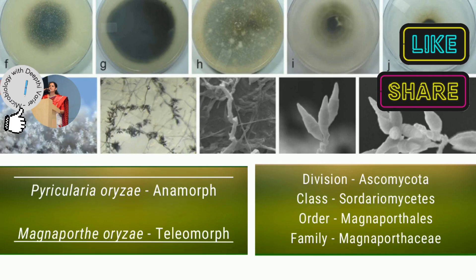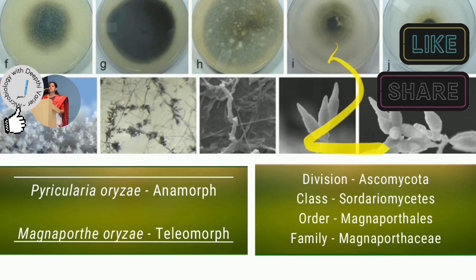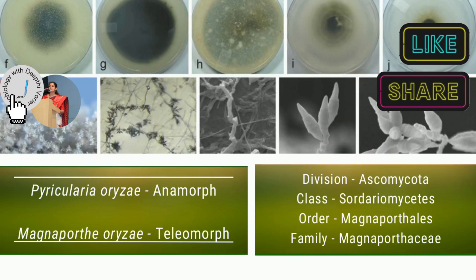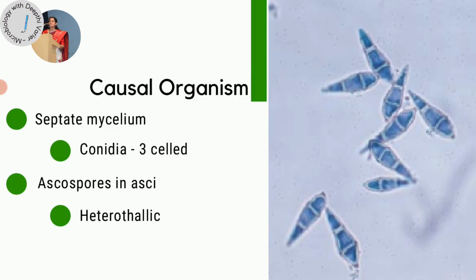This organism belongs to the Ascomycetes, so it forms ascospores as the sexual spores. On agar it gives a fleecy grayish colony, and under the microscope its spores appear in a spindle or fusiform shape. The mycelium is septate and haploid. The asexual spores are known as conidia, which are formed on conidiophores - reproductive stalks that bear conidia at their tips. The conidia are three-celled with two septa, and these conidiophores and conidia arise from the center of lesions on the rice plant.